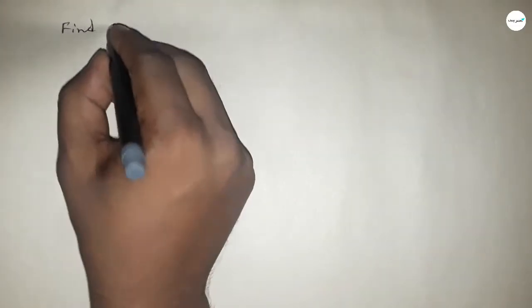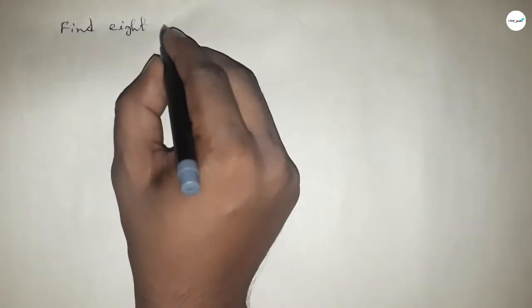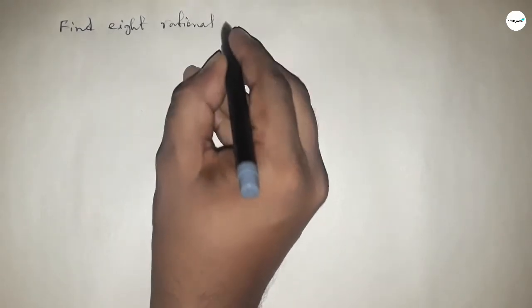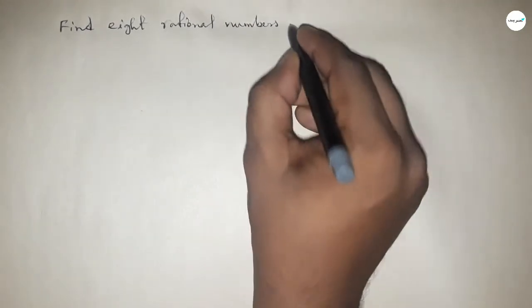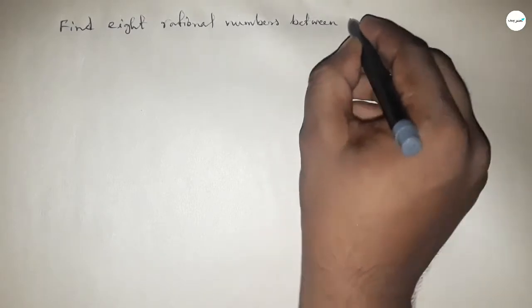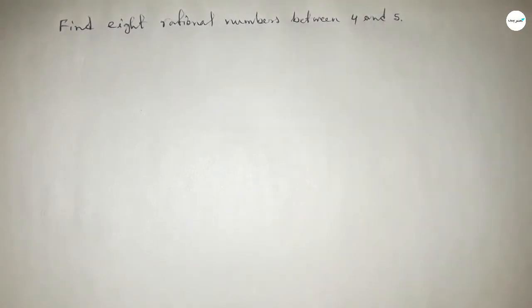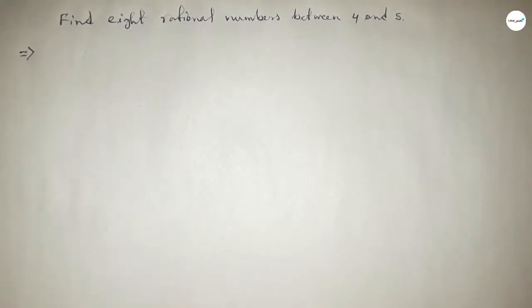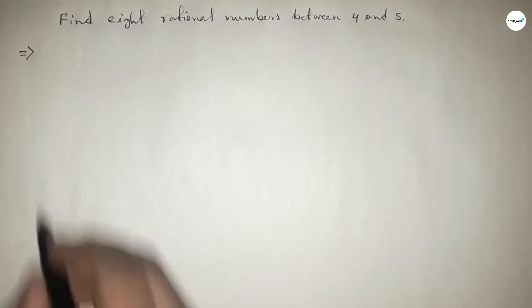Hi everyone, welcome to SSR classes. Today in this video we have to find eight rational numbers between 4 and 5. So finding eight rational numbers between 4 and 5, let's start.